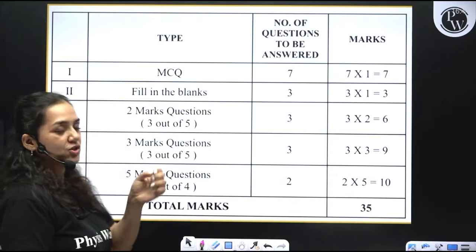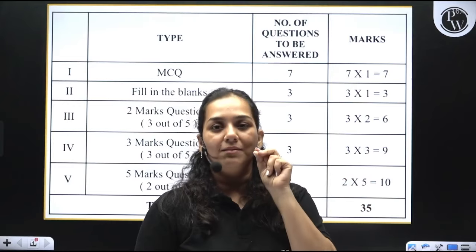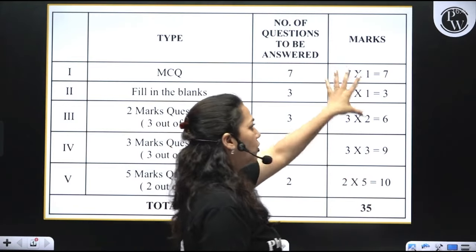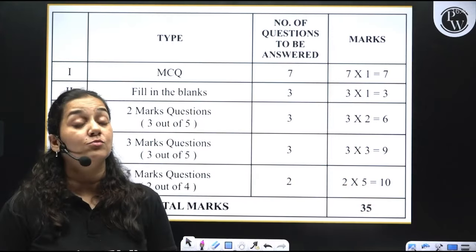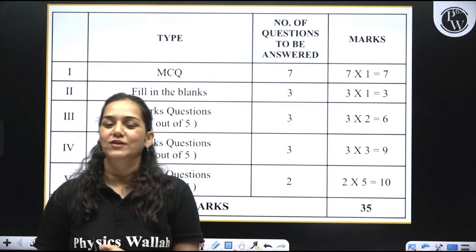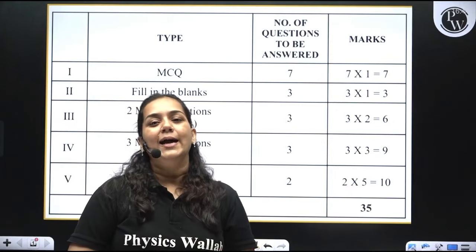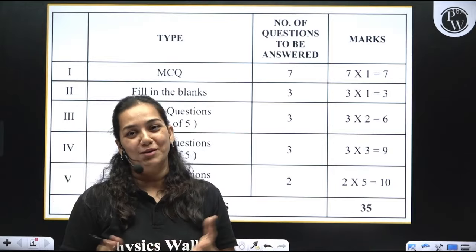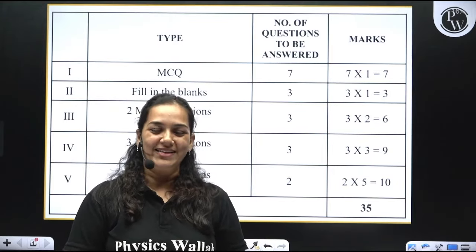Next, for the 5-marks questions, two are given and you need to answer them — that carries 10 marks. If you total it all up, you will get a total of 35 marks. This is most likely your pattern of question paper for the First PUC term examination. I hope this helps, and if any different format is being followed, do let me know in the comment section. Thank you.